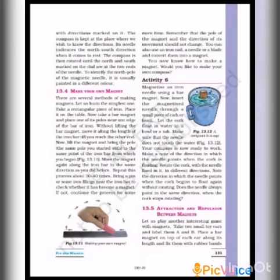To identify the north pole of the magnetic needle, it is usually painted in a different color. The north pole and south pole can thus be distinguished. The compass comes to rest pointing in the north-south direction.